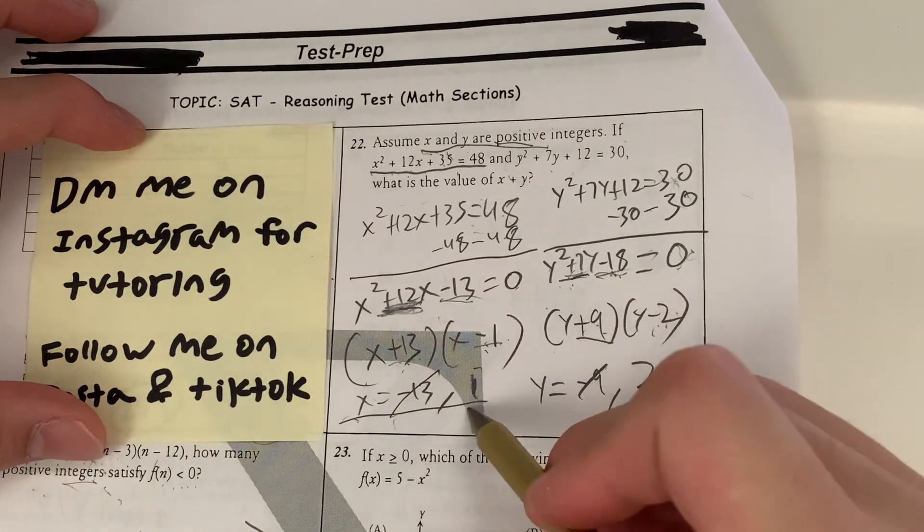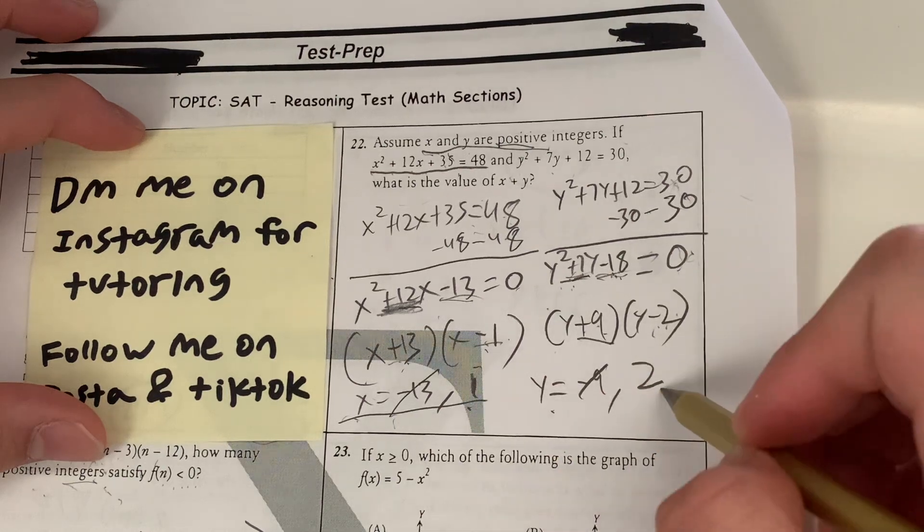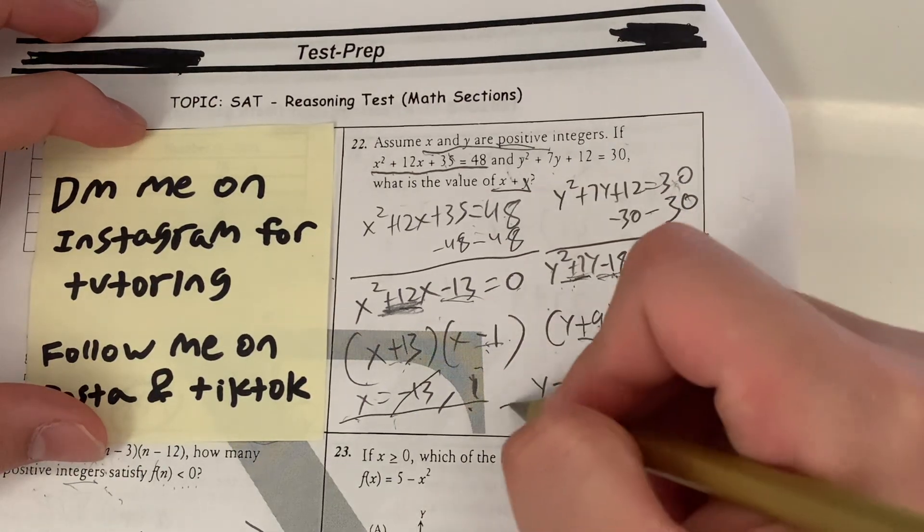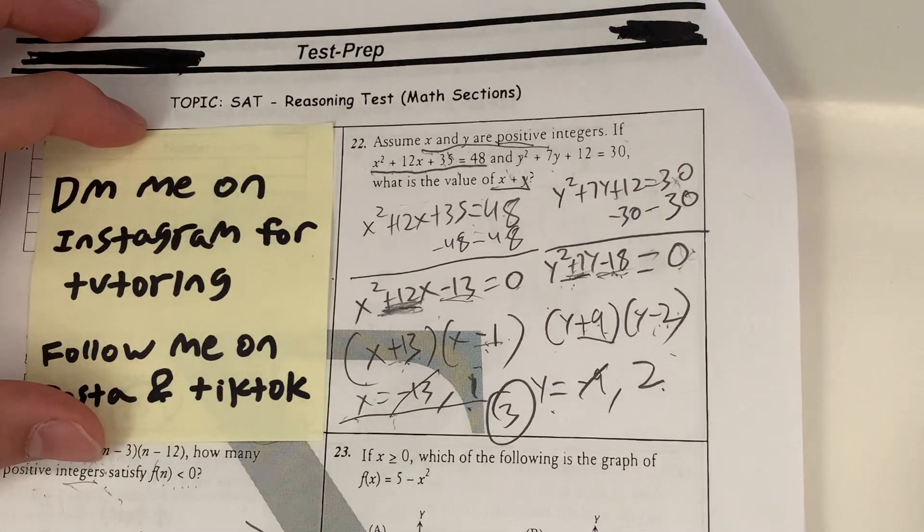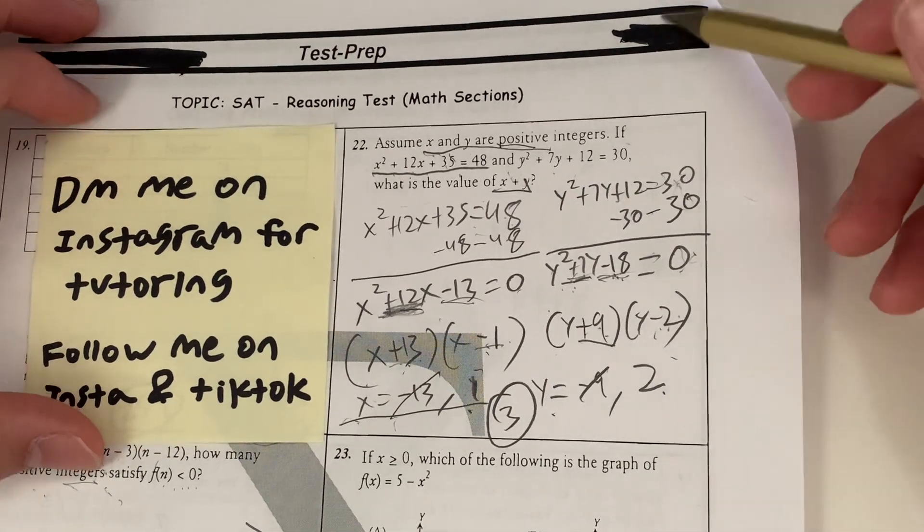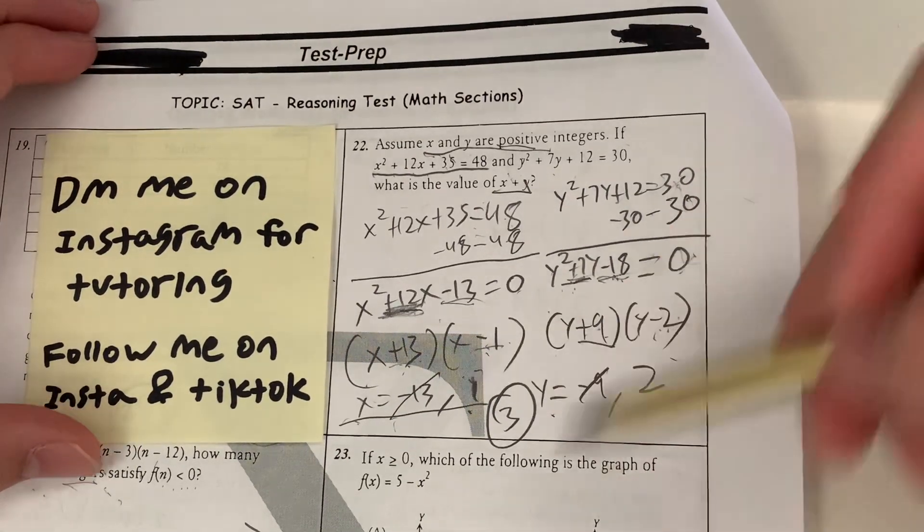So the value of x is 1. The value of y is 2. The question is asking for x + y. 1 plus 2 is 3. Meaning your answer has to be 3. So this question requires a little bit of work as long as you know how to factorize and how to solve quadratics.